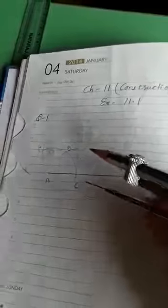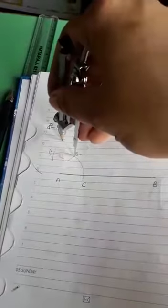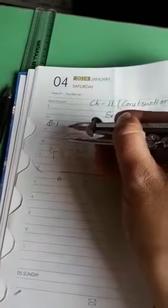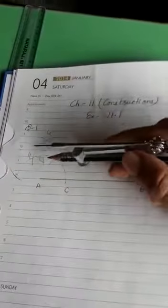But now here we have to draw angle 90 degrees. So now with the same radius and E as center we cut another arc here, and F as center we will cut this arc at point G. Now we join A with G. This AG is angle 90 degrees.